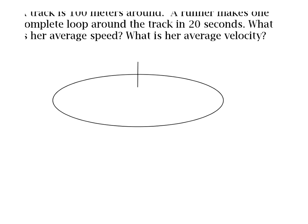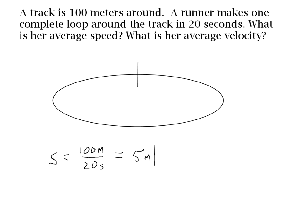The total distance that the runner travels is 100 meters. Since speed is distance divided by time, speed in this case is 100 meters divided by 20 seconds, or 5 meters per second. Velocity is displacement over time, and displacement is the straight-line distance between your starting point and ending point. If the runner made one complete loop around the track, the velocity is zero because the displacement is zero — if you start and end at the same point, your displacement is zero, and therefore your velocity is also zero.